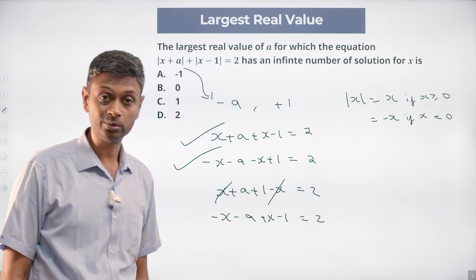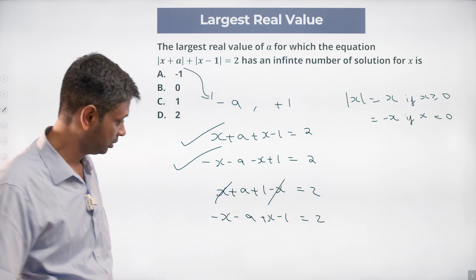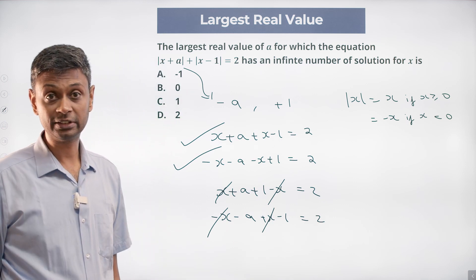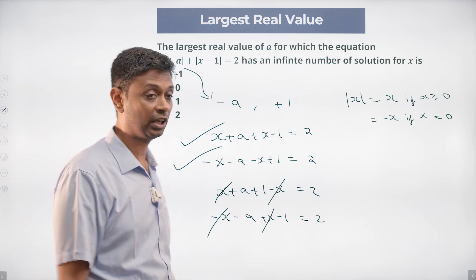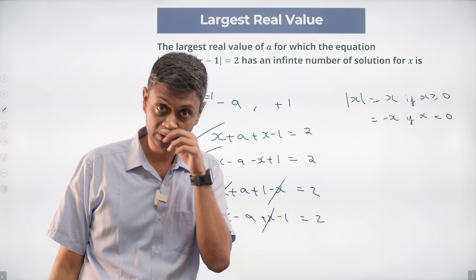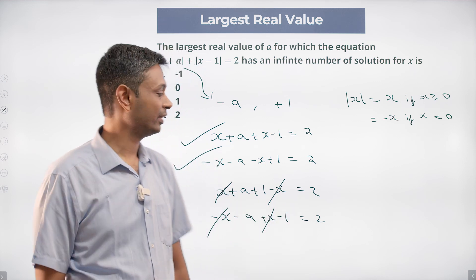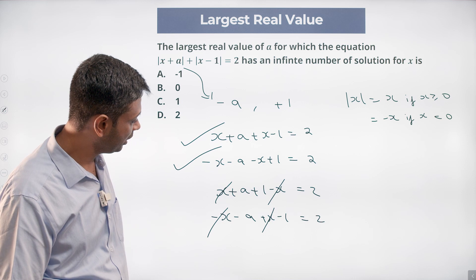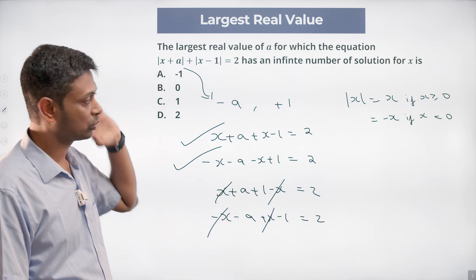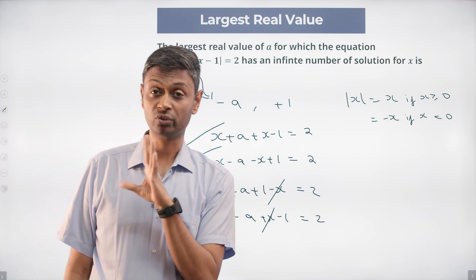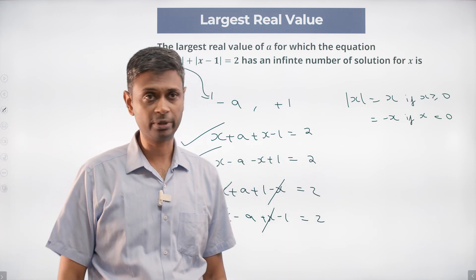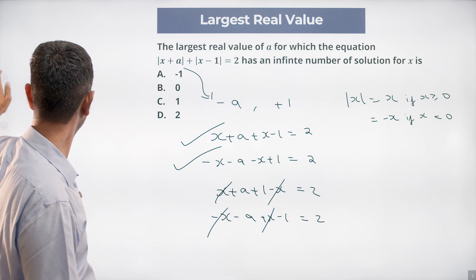Solving the mixed-sign cases: a + 1 = 2 gives a = 1; and -a = 3 gives a = -3. If a = 1 or a = -3, any x will satisfy the equation — that's what we're solving for. Therefore a could be 1 or -3; the largest value is 1. That's the algebraic brute-force method, but the visual method works better.